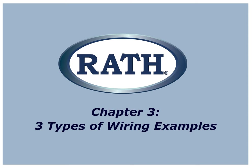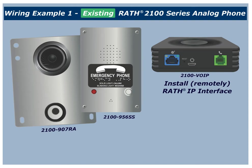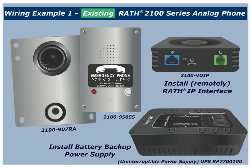Chapter 3: Three Types of Wiring Examples. Wiring Example Number 1: Existing Rath 2100-Series Analog Phone. We will demonstrate the wiring for a 2100-Series analog phone in the elevator. It will require an IP interface 2100 VOIP, and an Uninterruptible Power Supply, or UPS, RP7700100.